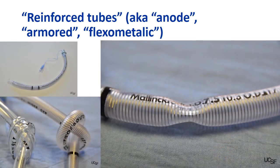The armored or reinforced tube was at one time heavily favored for head and neck cases, including neurosurgery cases and prone cases. The reason for this was that PVC tubes of the day were often quite kinkable, and having a wire reinforced wall reduced the likelihood of kinking. However, it is possible for total obstruction of the wire reinforced tube to occur.